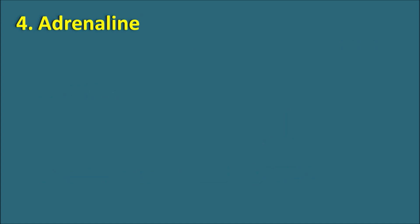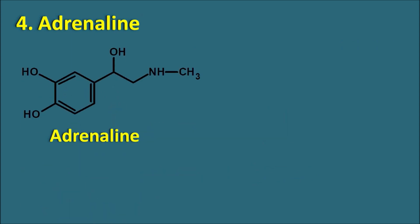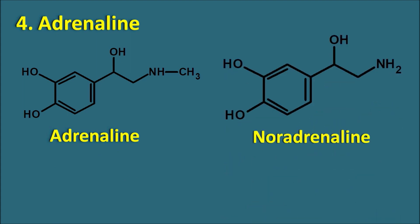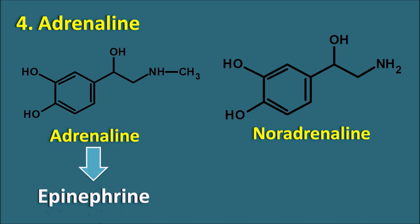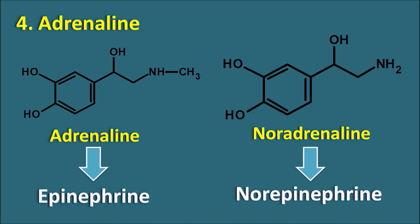The fourth one is adrenaline. This is the structure of adrenaline, which is a catecholamine, and noradrenaline is the related catecholamine — in noradrenaline the methyl group is not present on the amine group. Adrenaline is considered as epinephrine, and similarly noradrenaline is considered as norepinephrine. The terminology has now changed, and in the literature we mainly use the terms epinephrine and norepinephrine. Epinephrine can be used in anaphylactic shock, and norepinephrine in hypotensive conditions.